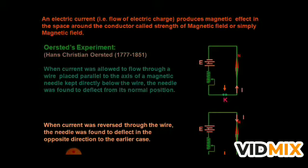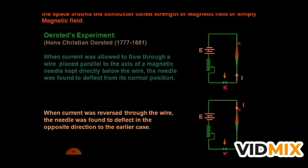When he reversed the direction of current, the deflection in the magnetic compass occurred again but in the opposite direction. After many observations, he concluded that whenever there is a current-carrying wire, there is always a magnetic field around it. In the diagram, when current was allowed to flow through a wire placed parallel to the axis of a magnetic needle kept directly below, the needle deflected. When current was reversed, the needle deflected in the opposite direction.